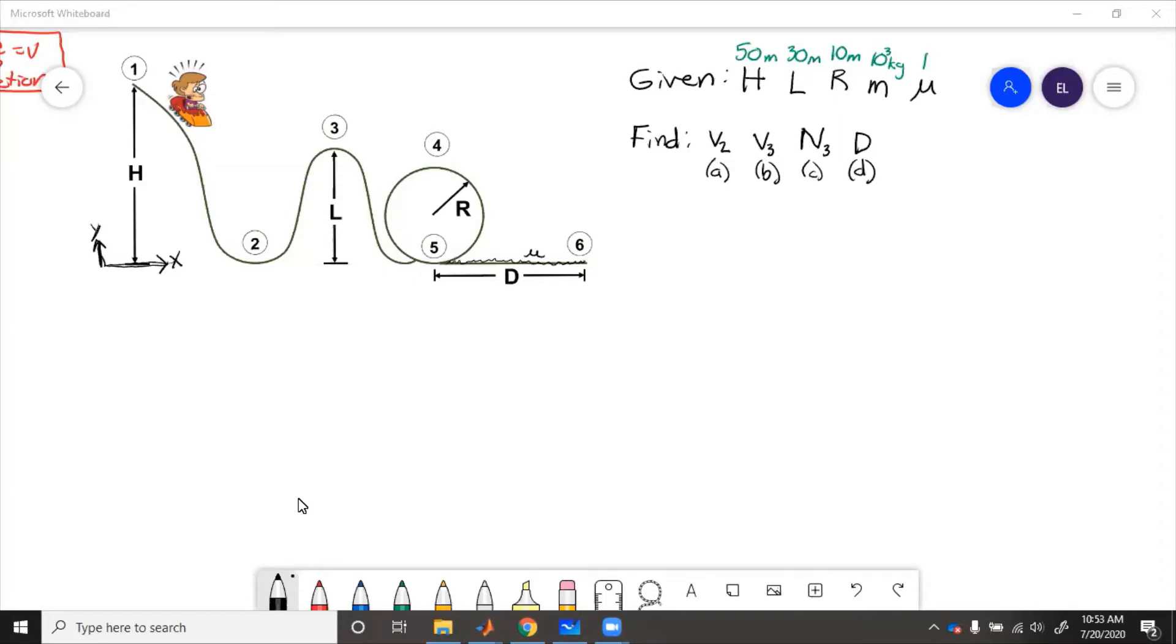We know that the loop is a circle and the second hill is semicircular, and we need to find velocity at states two and three, normal force at state three, and stopping distance.